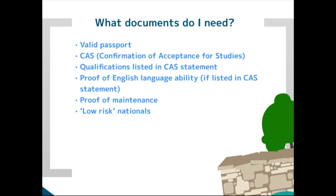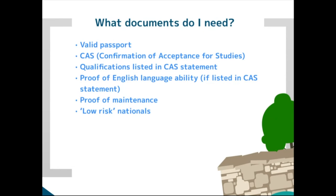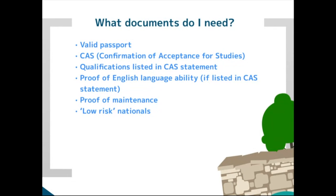Your qualifications will be listed on your CAS — for example, an undergraduate degree certificate if you're going on to a master's, or a master's certificate if going on to a PhD. You may also need to prove your English language ability — it could be an IELTS certificate, or the university may have made its own assessment, which will be stated on your CAS. Read the information on your CAS very carefully before submitting your visa application.